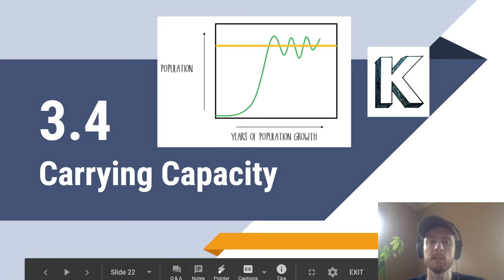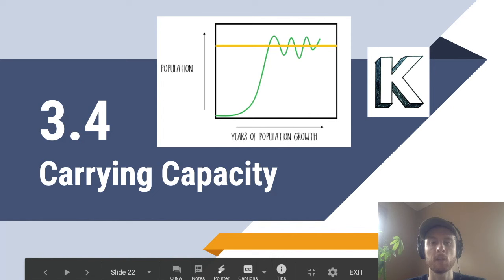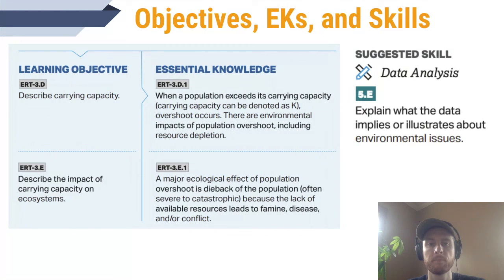Carrying capacity is different for each species. So while this yellow line in the graph could be the carrying capacity for deer in an ecosystem, the carrying capacity for wolves would likely be a lot lower since they have different habitat and food needs. You'll also notice that populations usually don't exist perfectly at the carrying capacity, but instead fluctuate around it, and we'll talk about why that is later on in the video.